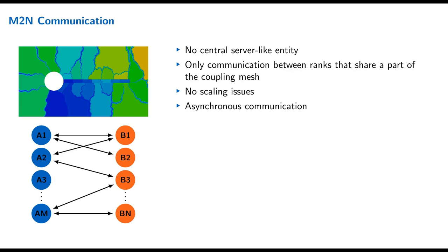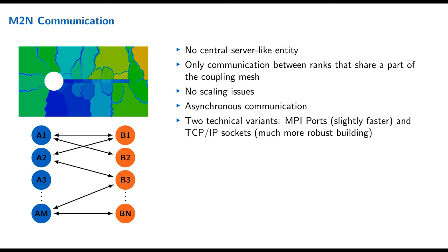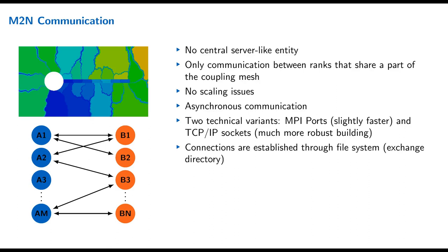preCICE uses synchronous communication with two technical variants: MPI ports, which is slightly faster, and TCP/IP sockets. I recommend TCP/IP sockets because they are not much slower, and for cases that aren't very large you won't feel the difference, but they are much more robust in terms of both building and runtime issues. To establish connections, preCICE needs access to a shared file system between the two solvers — but this has no large performance impact because only small socket files are exchanged, not data.